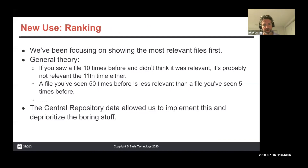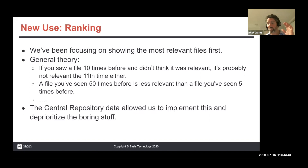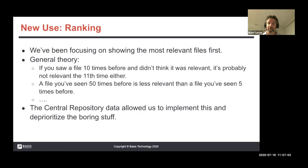Over the past year or so we've started to use this data in different ways — on ranking. As I mentioned before, we've been focusing on how do we go beyond AltaVista and into Google, so people can see the most relevant data first among overwhelming amounts. The general theory is: if you've seen a file 10 times before and it wasn't relevant, it's probably not relevant the 11th time either. If you've seen it 50 times, that's even less relevant than something you've only seen five times. We can use this to prioritize data and deprioritize the boring stuff, focusing on the unique and probably relevant items.